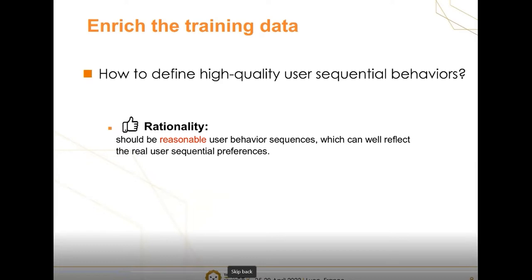However, only focusing on the rationality of the data does not necessarily improve the performance of the recommender models. Take an extreme example: if we generate the data by just copying the original data, the generated sequences are completely reasonable, but they are useless for improving the performance, since no additional information can be introduced to broaden the model's views.